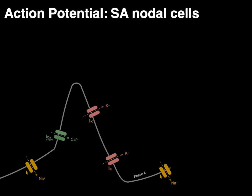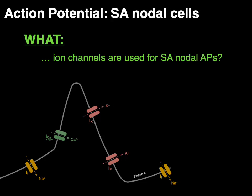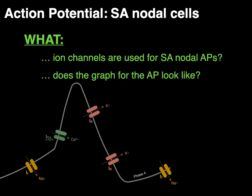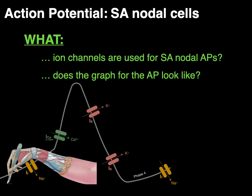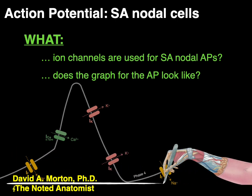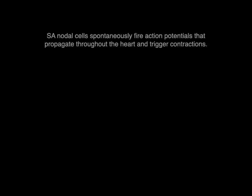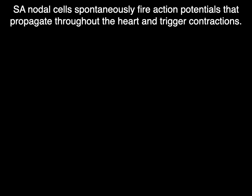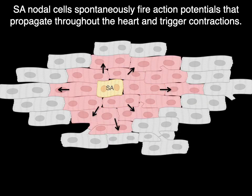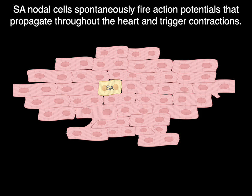We're going to talk about action potentials for SA nodal cells and answer the questions: what ion channels are used for SA nodal action potentials, and what does the graph for the action potential look like? Hello everyone, my name is Dr. Morton and I'm the noted anatomist. SA nodal cells spontaneously fire action potentials that propagate throughout the heart and then trigger contractions. Let's take a look.